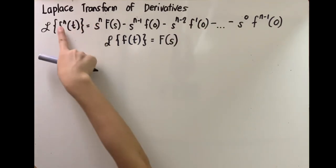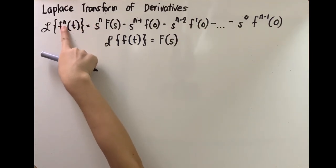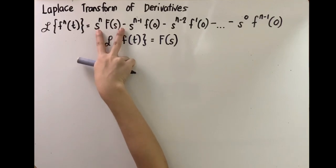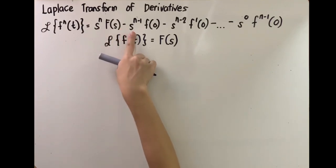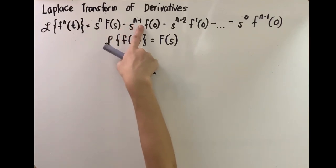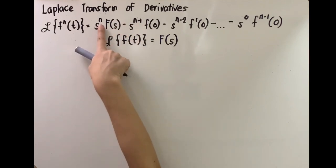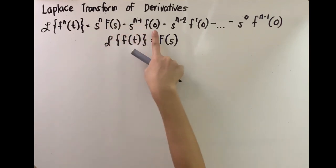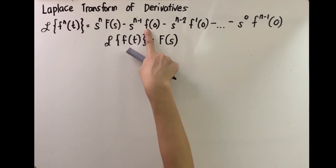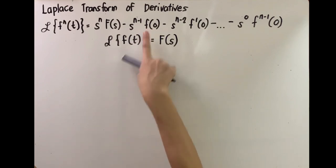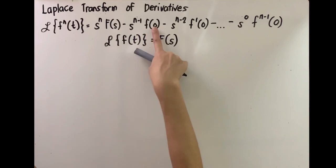We'll have s raised to n — same as the order of the derivatives — multiplied by F of s, the Laplace transform of the original function. Then minus s raised to n minus 1, meaning we subtract 1 from the exponent of s. It will be multiplied by f of 0, where f of 0 means the original function f of t with t replaced by 0.